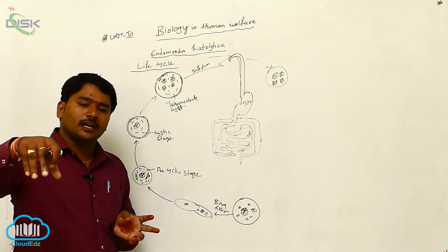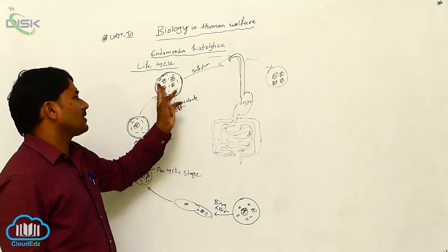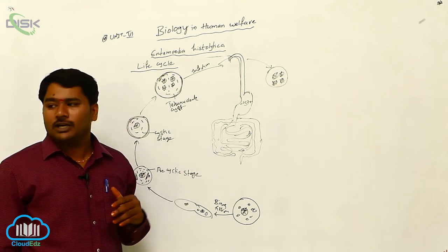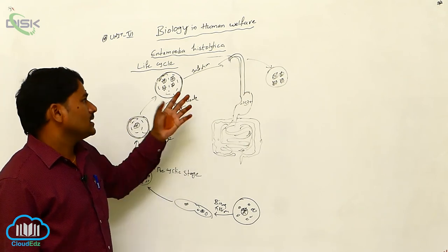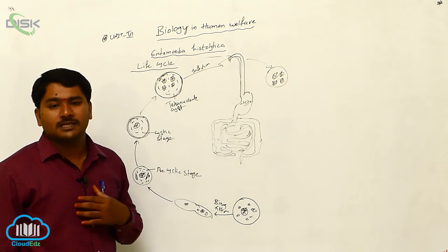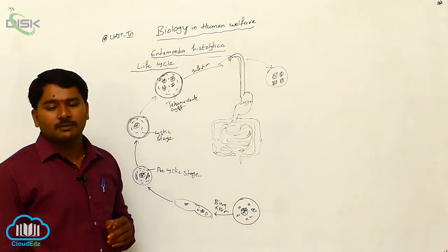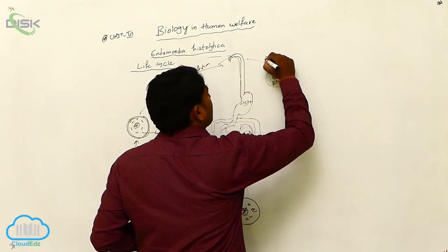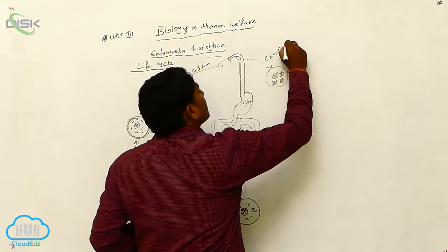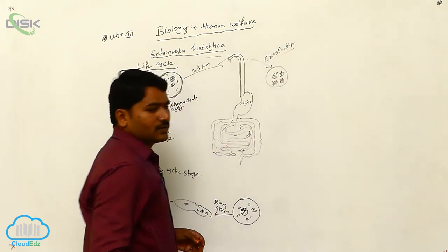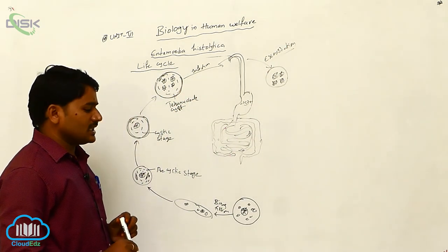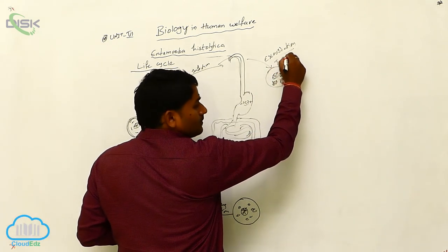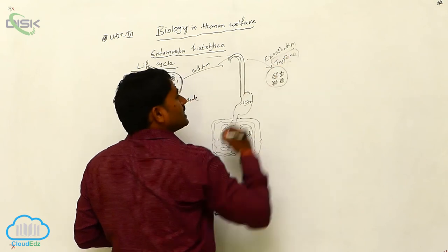House flies alight on that fecal matter and carry the tetranucleate cyst to our food and water materials. When we take that contaminated food and water, infection takes place. When it enters into the digestive system of the man, due to the effect of trypsin enzyme, the cyst is dissolved.